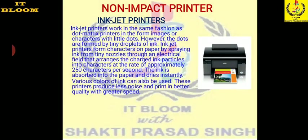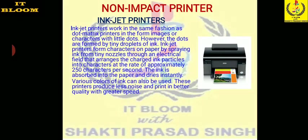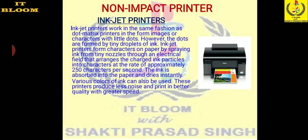However, the dots are formed by tiny droplets of ink. Inkjet printers form characters on paper by spraying ink from tiny nozzles through an electrical field that arranges the charged ink particles into characters at approximately 250 characters per second. The ink is absorbed into the paper and dries instantly. Various colors of ink can also be used. This printer produces less noise and prints in better quality with greater speed.